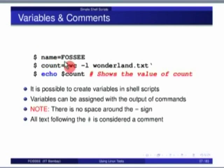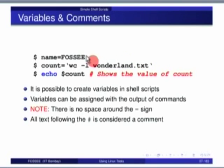For example, you can say 'count = wc -l wonderland.txt' — it will give you the total number of lines. Whatever number comes as the answer, you want to assign to the variable count. Once assigned, you cannot just echo 'count'; you have to echo the value of the variable count.